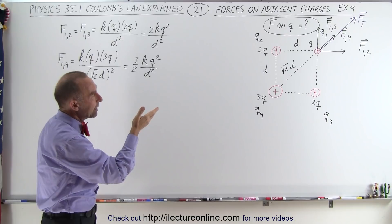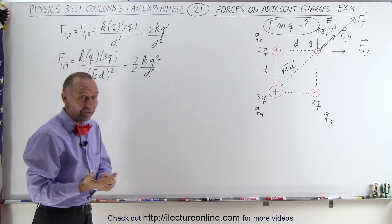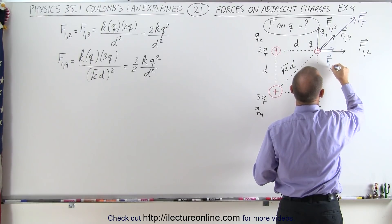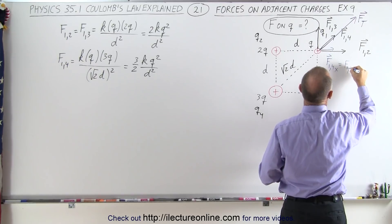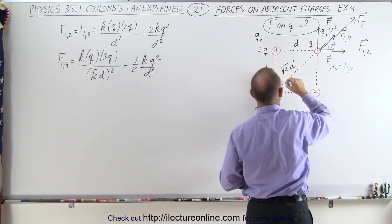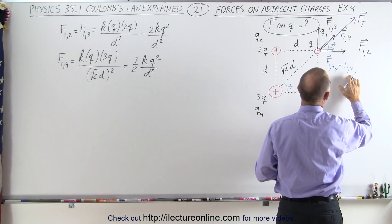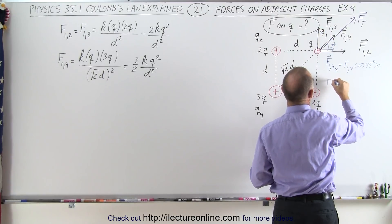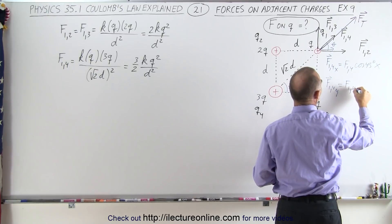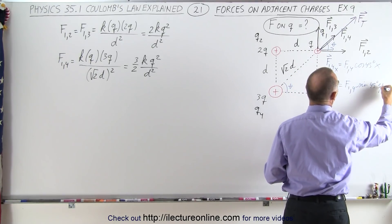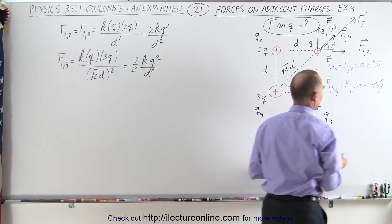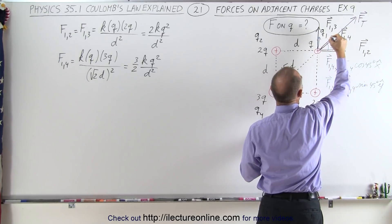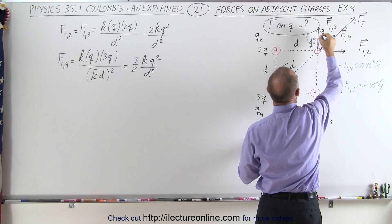F1,4 is pointing at an angle, and in order to add vectors we need to find its x and y components. The x-component is F1,4 times cosine of 45°, and the y-component is F1,4 times sine of 45°. Both are positive because the x-component points to the right and the y-component points upward.